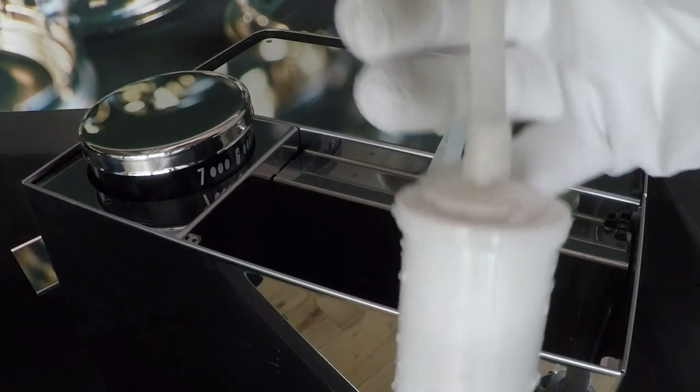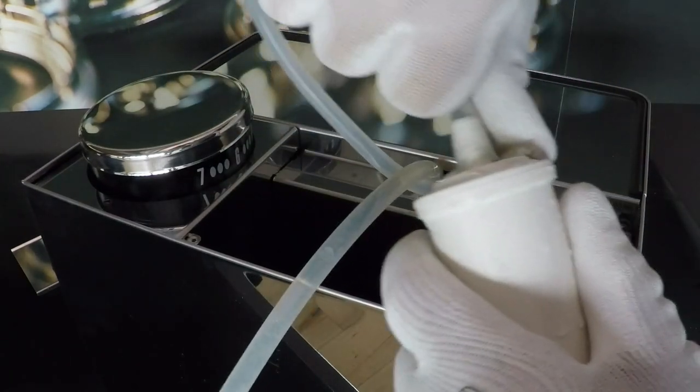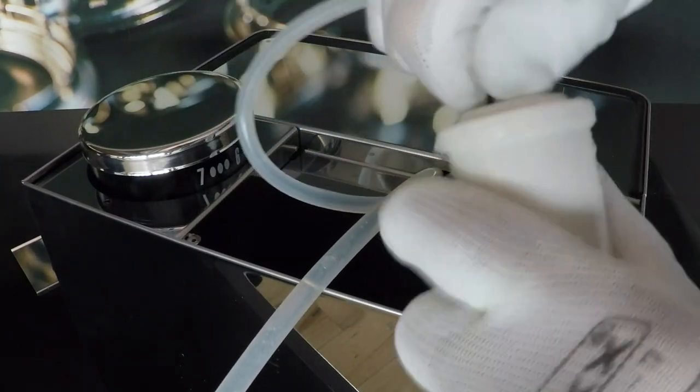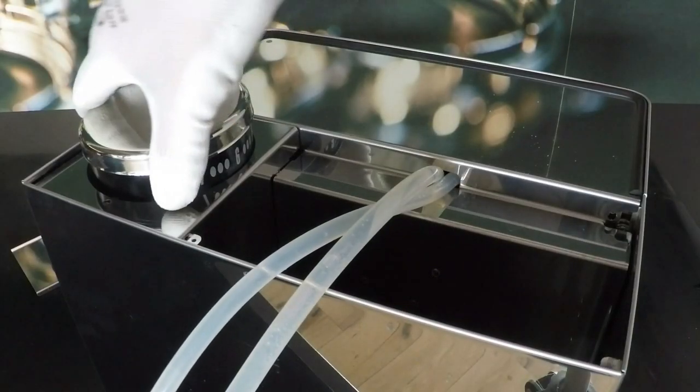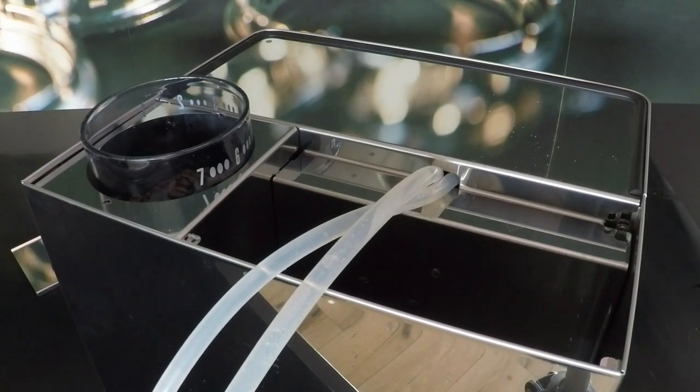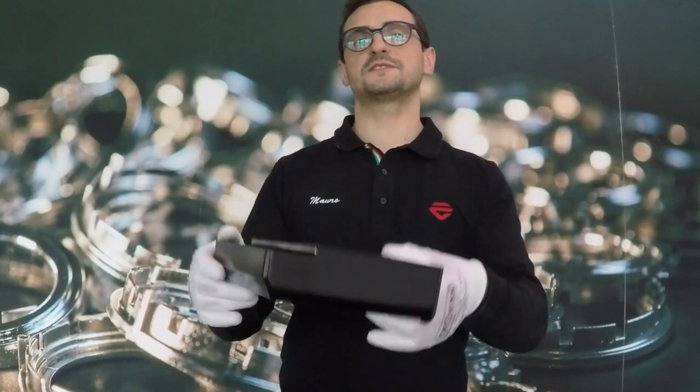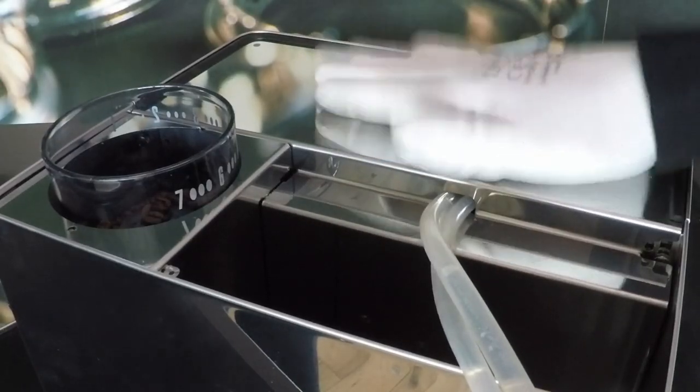Remove also the resin filter and the cover, the hopper cover. Remove the water drip tray. Now I can remove the top machine.